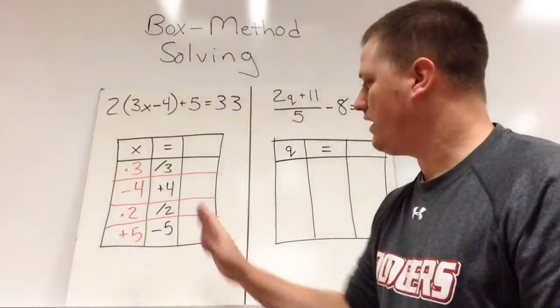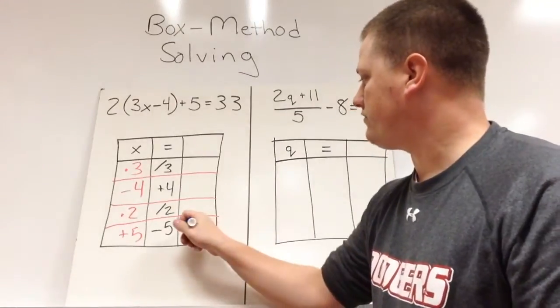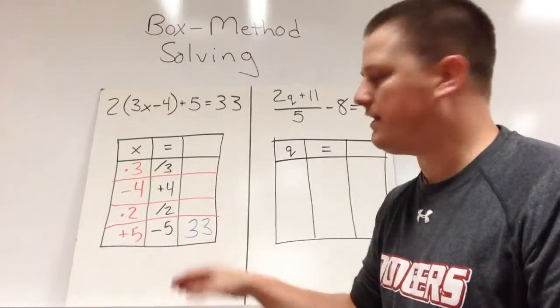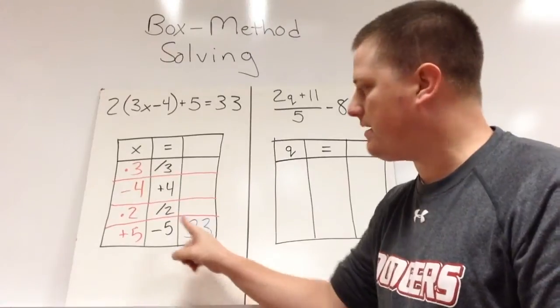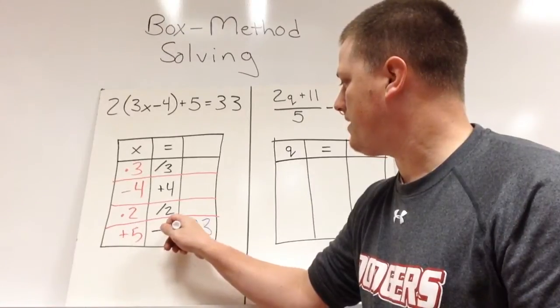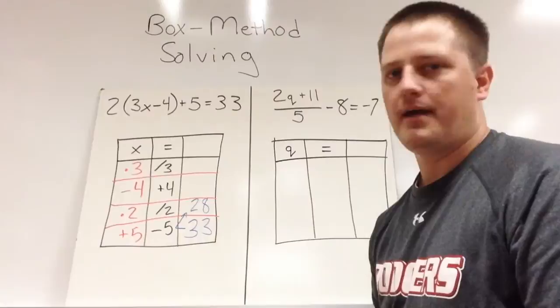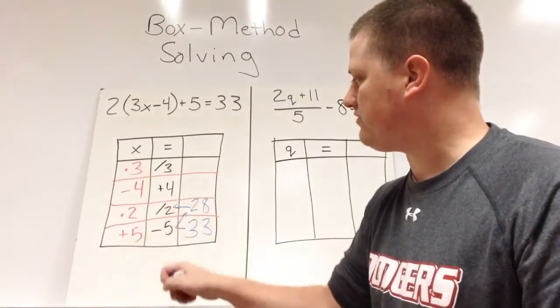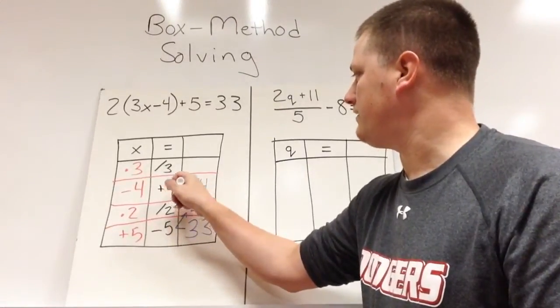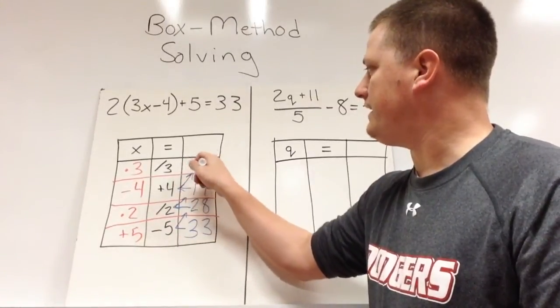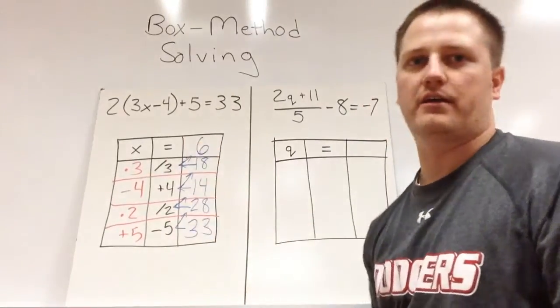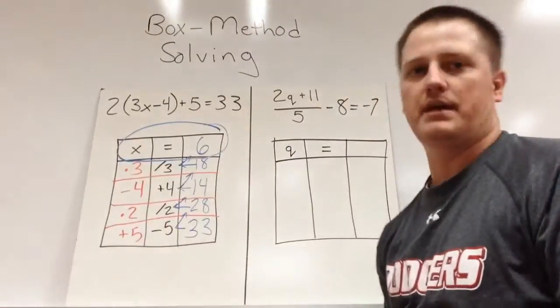This right column is going to work from the bottom up. And we're going to start with our thirty-three. Now one of the things that we have to deal with is we're always starting with this right column. So this problem is actually saying thirty-three minus five. So thirty-three minus five will give us twenty-eight. Then we take twenty-eight divided by two which will give us fourteen. Then we'll take fourteen plus four which will give us eighteen. And eighteen divided by three which will give us six. So x is six in this situation.